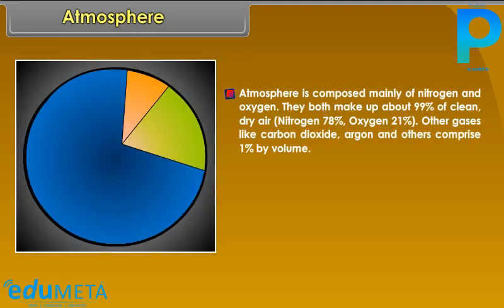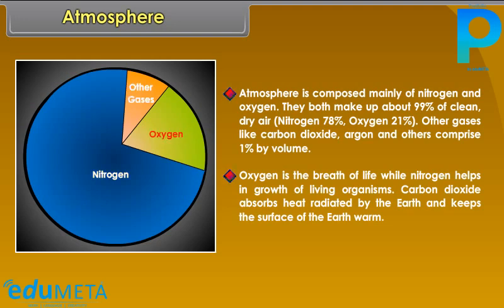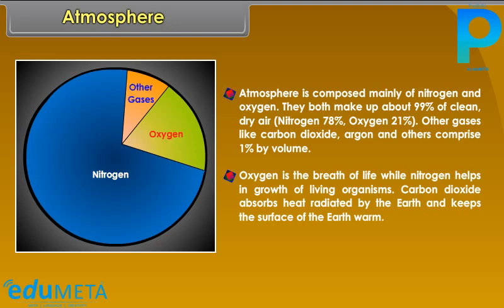The atmosphere is composed mainly of nitrogen and oxygen, which together make up about 99% of clean, dry air — nitrogen at 78% and oxygen at 21%. Other gases like carbon dioxide, argon, and others comprise 1% by volume. Oxygen is the breath of life, while nitrogen helps in the growth of living organisms. Carbon dioxide absorbs heat radiated by the earth and keeps the surface of the earth warm.